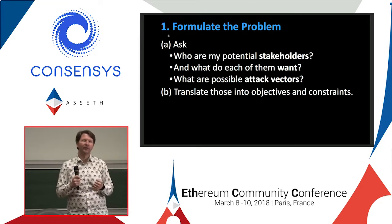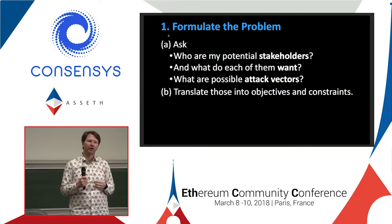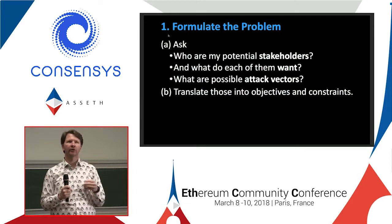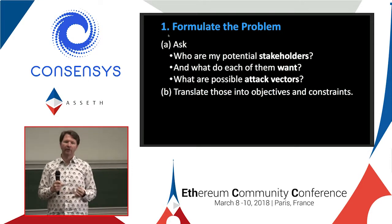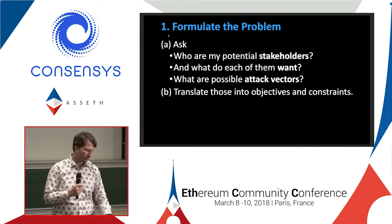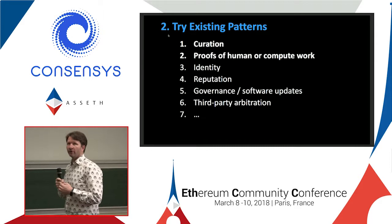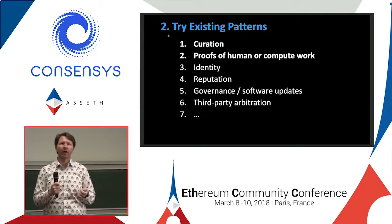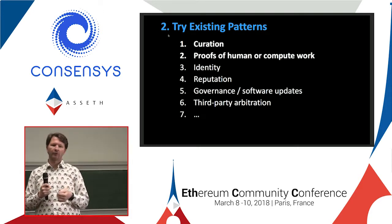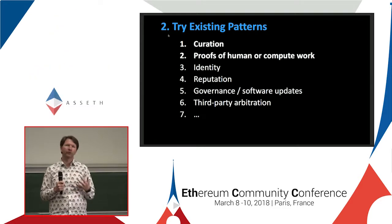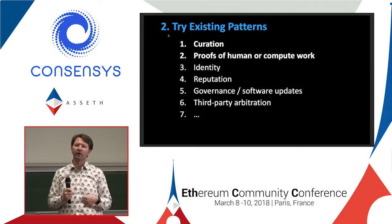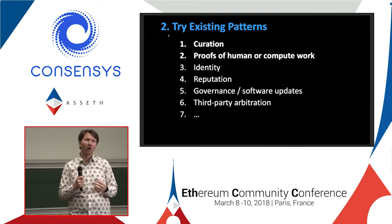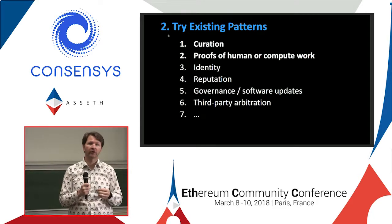Formulating the problem: first, ask who are your stakeholders? What does each of them want? And also, what are the different attack vectors? Because every single attack vector is going to turn into a constraint. Then trying existing patterns — some people call these crypto-economic primitives. I like the word patterns because it goes back to design patterns in software or architecture. There are patterns for curation, proofs of compute work, identity, reputation, governance, third-party arbitration, and more. Within each of these, you have to ask: is this appropriate for me? Sometimes they might form the core of your system, or they might be additions that address a particular attack vector.